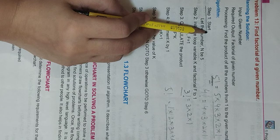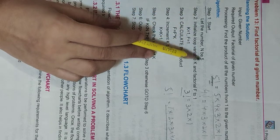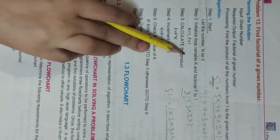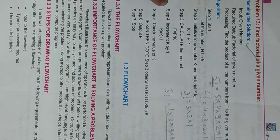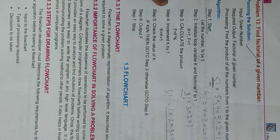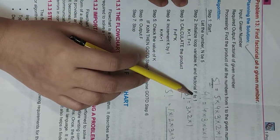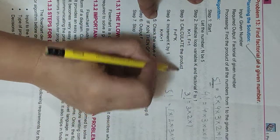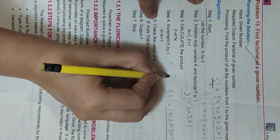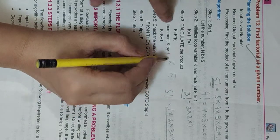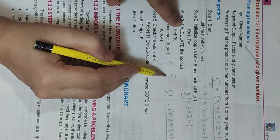Algorithm step number 1: let the number N be 5. Step number 2: initialize loop variable k and factorial to 1. We have two variables — one is k and one is f, which represents factorial. K is the number we will increment. Both starting values, factorial (f) and k, are initialized to 1.